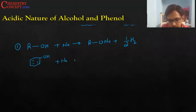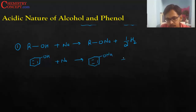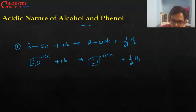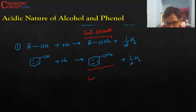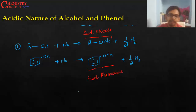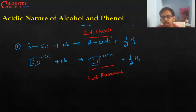The same type of reaction is also observed when phenol reacts with sodium — again the sodium salt is formed and hydrogen gas is produced. The product formed is called sodium alkoxide (in the case of alcohol) and sodium phenoxide (in the case of phenol).